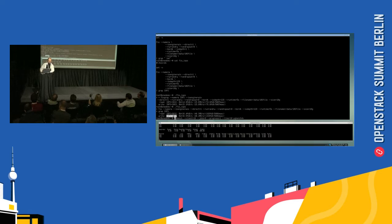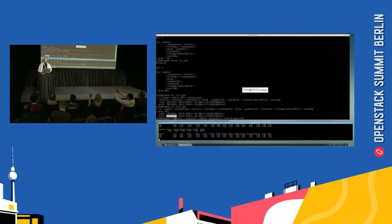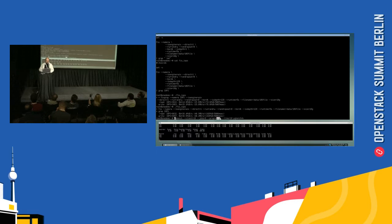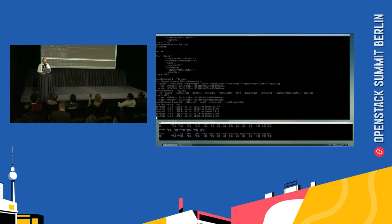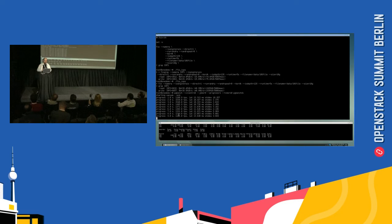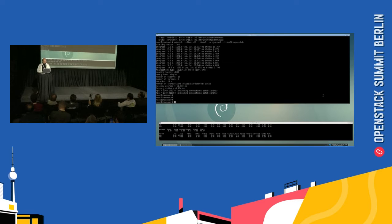pgbench is a benchmarking tool provided by PostgreSQL. The way we use it here completely follows the described test methodology by PostgreSQL — it's not a random benchmark we wrote, it's an established benchmark. There are 16 clients in parallel on eight threads. We'll see progress every second and total benchmark time is 10 seconds. The database can do — the average transactions per second for the whole test — it's 1,400 transactions per second on this volume.